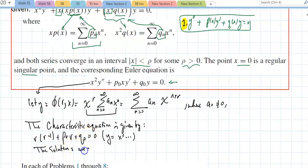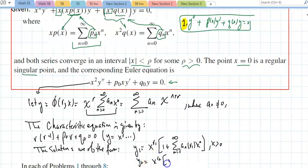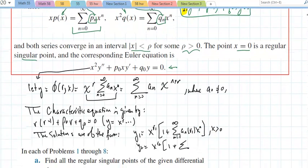Both solutions are of the form: y1 will equal x to the r sub 1 into 1 plus the series n equal 1 to infinity, a sub n r sub 1 x to the n, x is positive. And y sub 2 is going to equal x to the r sub 2 into 1 plus the series n equals 0 to infinity, a sub n r sub 2 x to the n. So pretty much you get the solution.